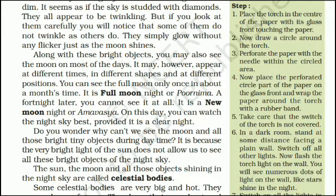A fortnight later, you cannot see it at all — it is a new moon night, or Amavasya. On this day, you can watch the night sky best, provided it is a clear night. Do you wonder why we can't see the moon and all those bright tiny objects during daytime? It is because the very bright light of the sun does not allow us to see these objects of the night sky. The sun, the moon and all those objects shining in the night sky are called celestial bodies.